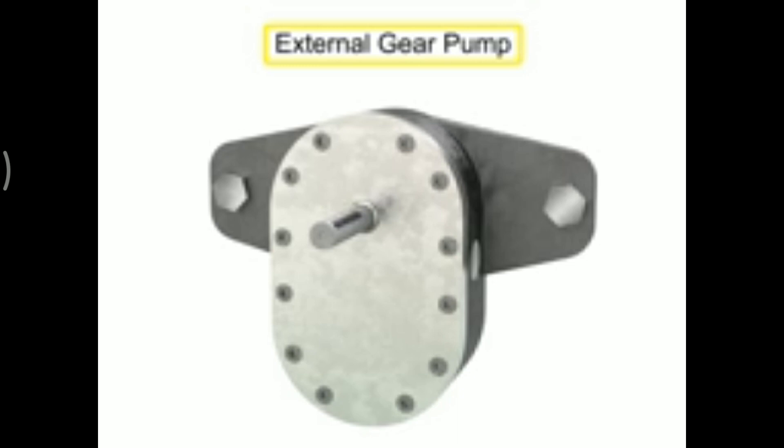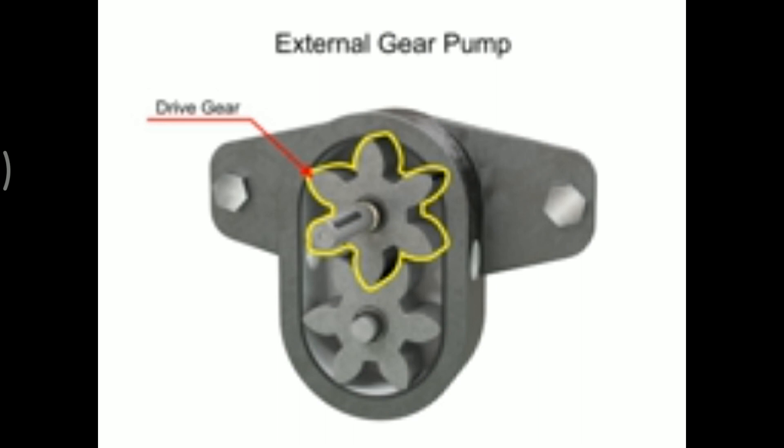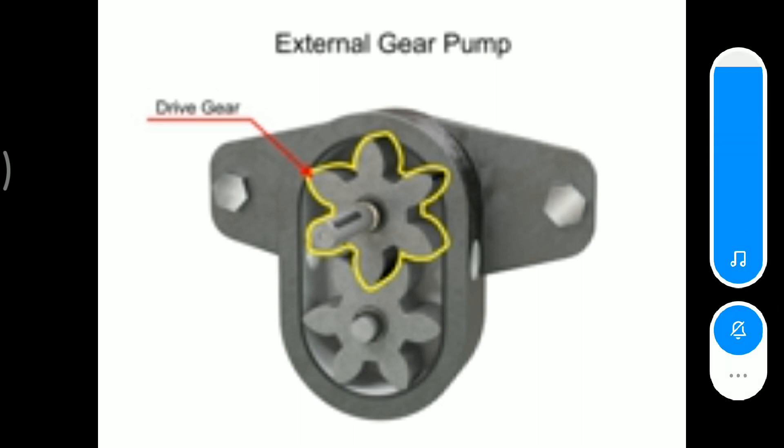An external gear pump uses two gears rotating against each other to provide fluid movement. One gear is driven by a motor connected to a shaft. This is called the drive gear because it is driven by a motor and it in turn meshes with and drives the movement of the second gear.